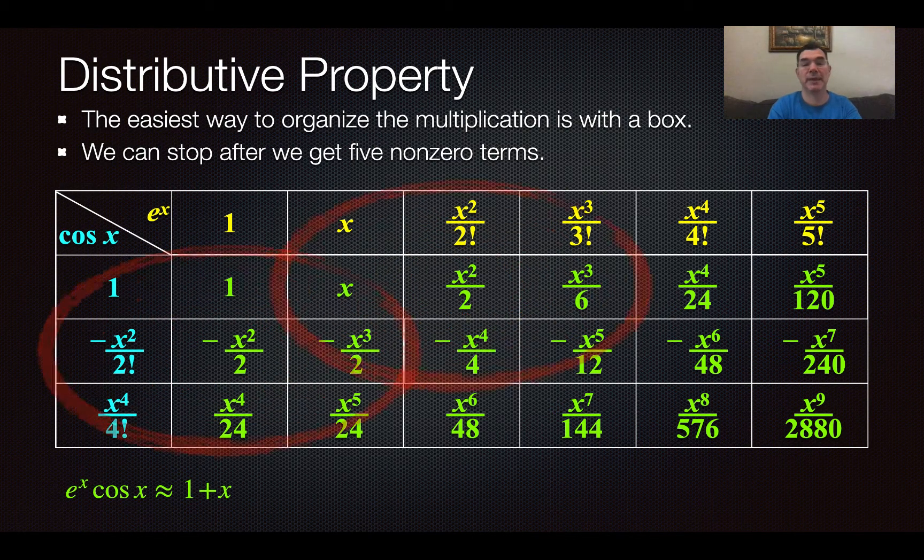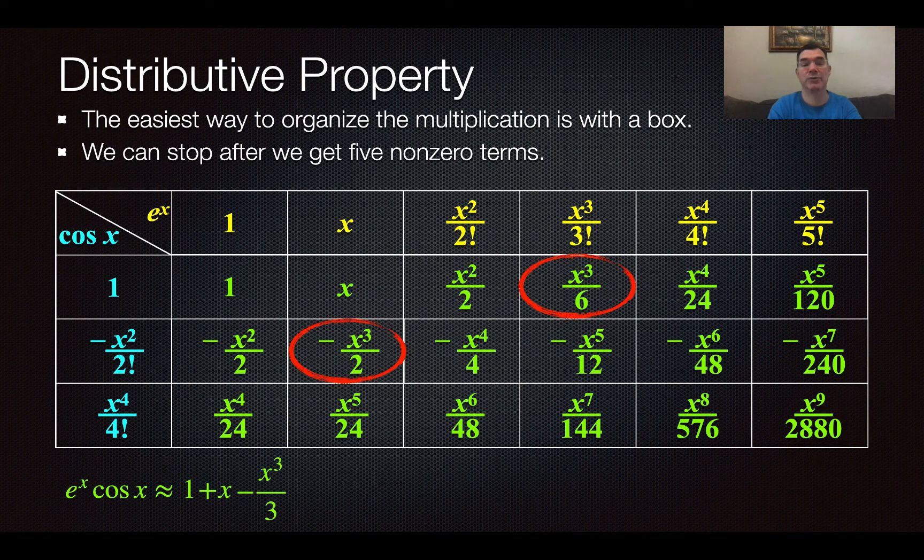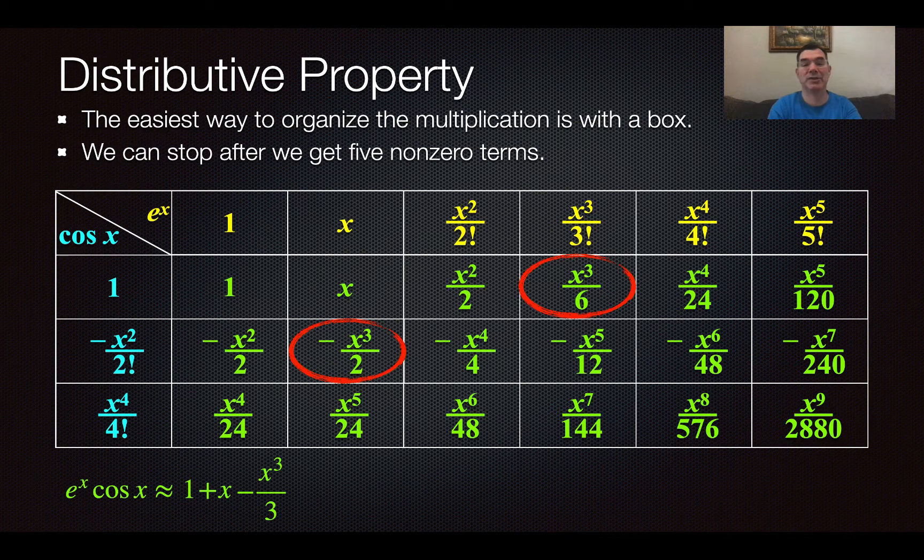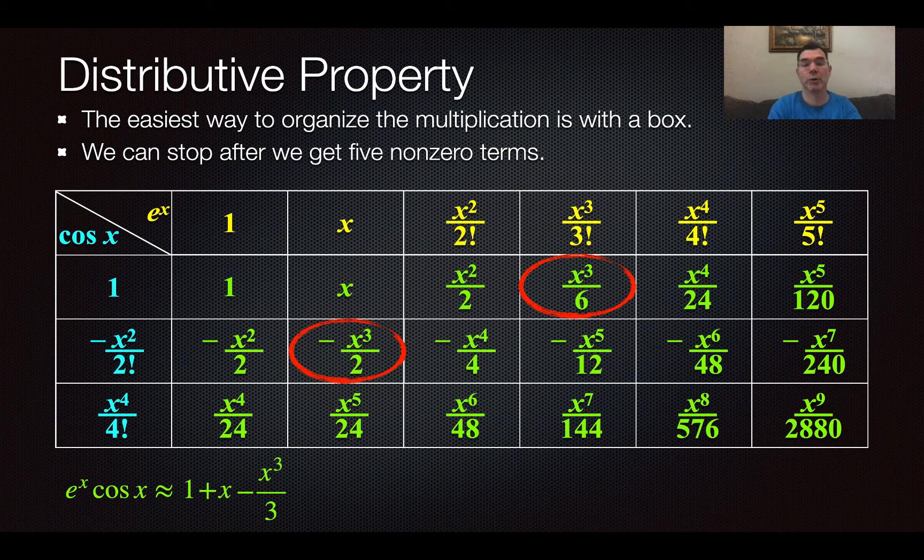So I'm going to skip that and move to my x to the thirds, and I have two of those. If I add those two together, I'm going to get negative x to the third over 3. So I'm up to three non-zero terms, so I'm going to keep going until I get to 5.